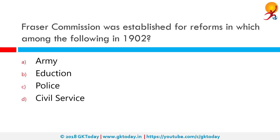The Fraser Commission was established for reforms in which among the following in 1902? In 1902, a police commission was established for police reforms under Sir Andrew Fraser and Lord Curzon, and it achieved much success in police intelligence work. The correct answer is police.